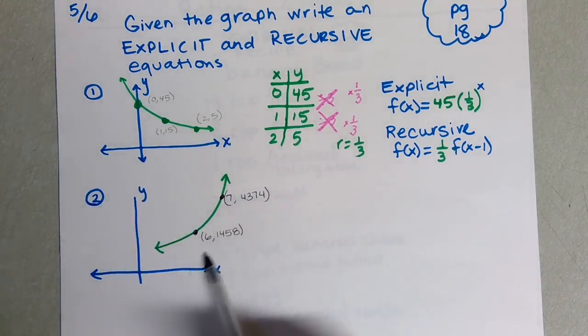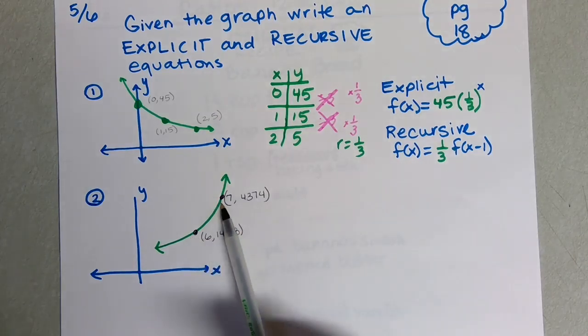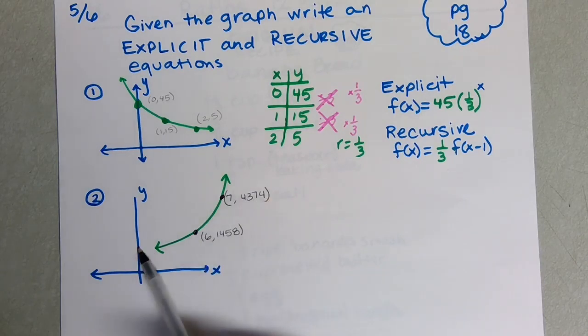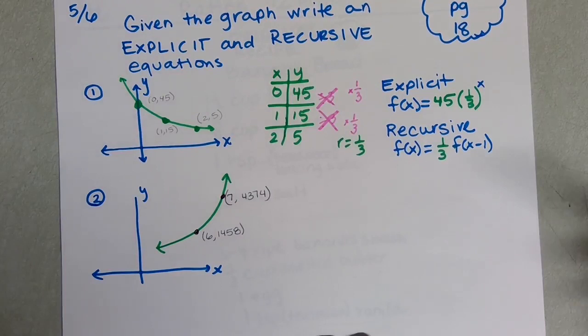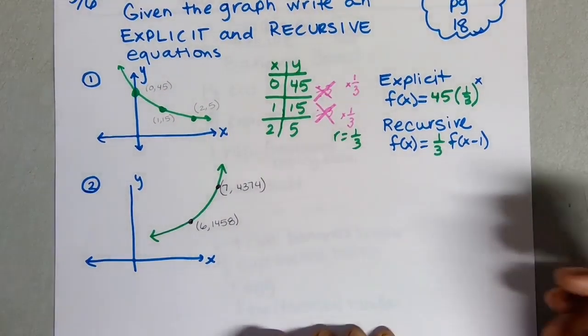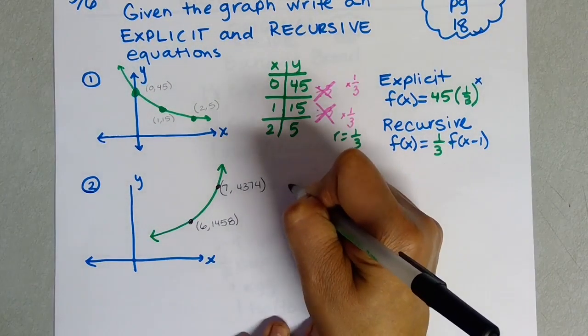Copy this down. We have our x-axis, our y-axis. It crosses at 6, 1458, and at 7, 4374, but we don't know our y-intercept, our zero value, or our first value, so that's going to be kind of a pain. I'm going to do the same thing I did before and make a table of values.